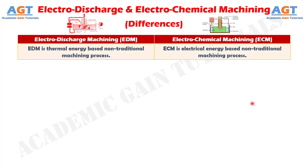Difference No. 1: Electro-Discharge Machining is a thermal energy-based non-traditional machining process, whereas Electro-Chemical Machining is an electrical energy-based non-traditional machining process.